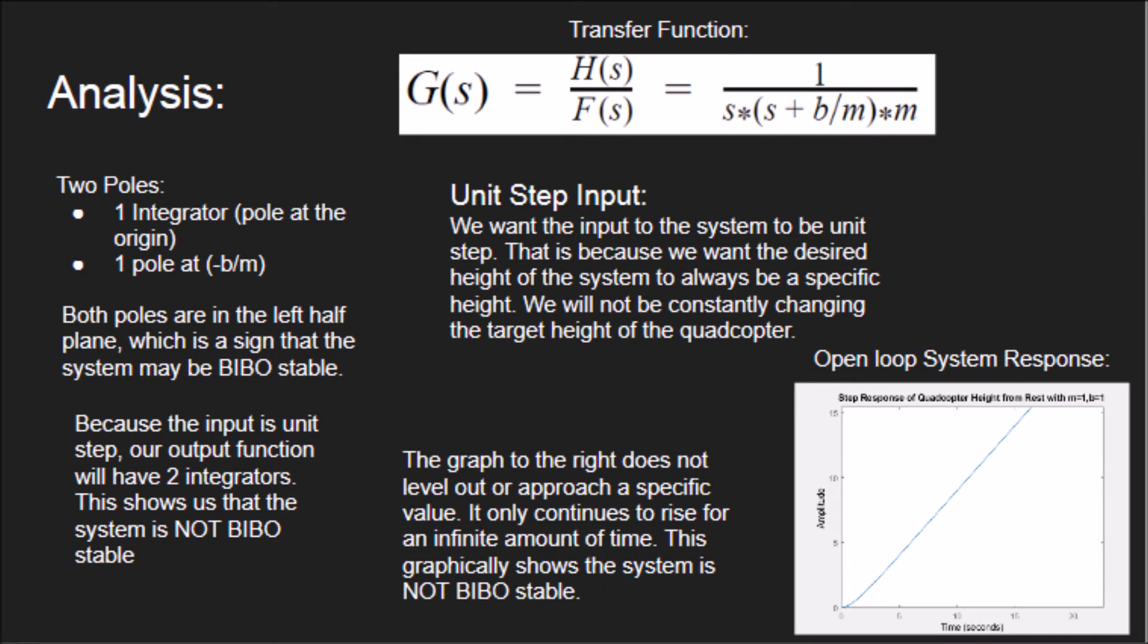This suggests that the system should be BIBO-stable, but this is not the case. As seen in the provided graph, the system is unbounded when the bounded step response is used as an input. The unit step is the most important input to examine because the desired height will be a constant value input into the system.